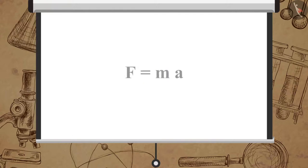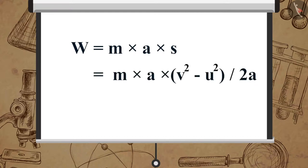We also know F is equal to MA. Now work done can be written as W is equal to M multiplied by A multiplied by S, which is equal to M multiplied by A multiplied by V square minus U square the whole upon 2A, which is equal to one-half M multiplied by V square minus U square.